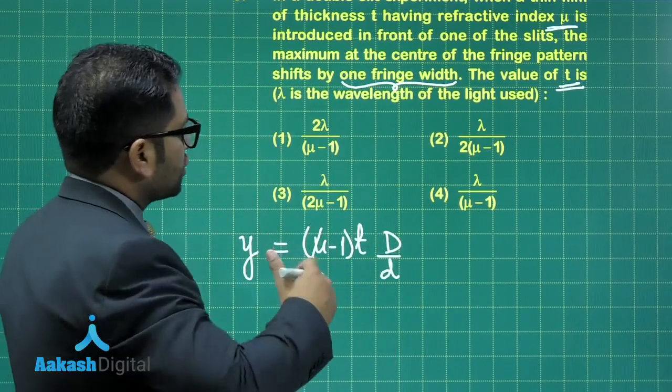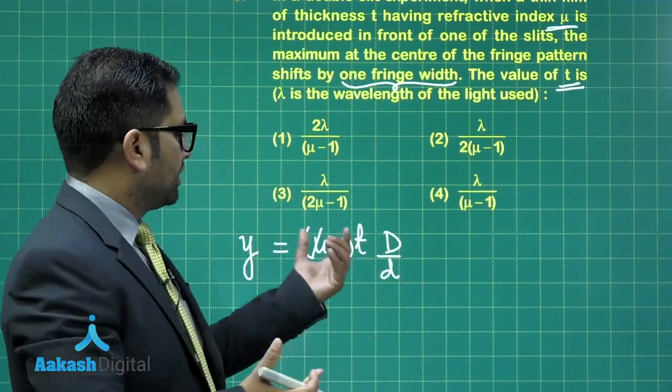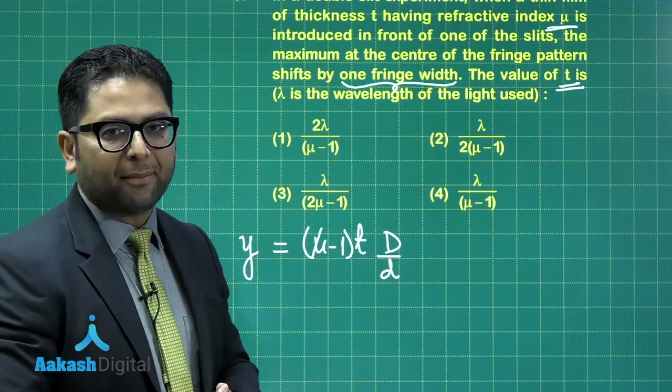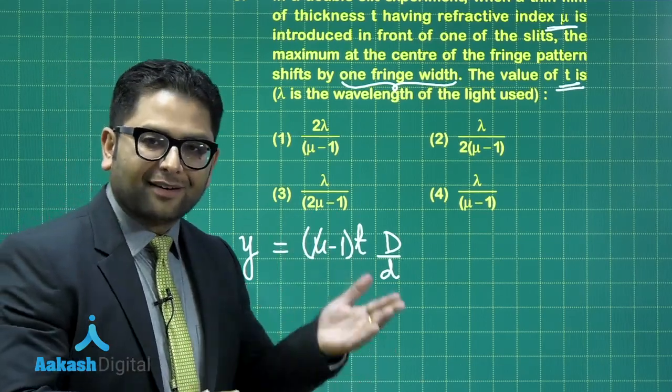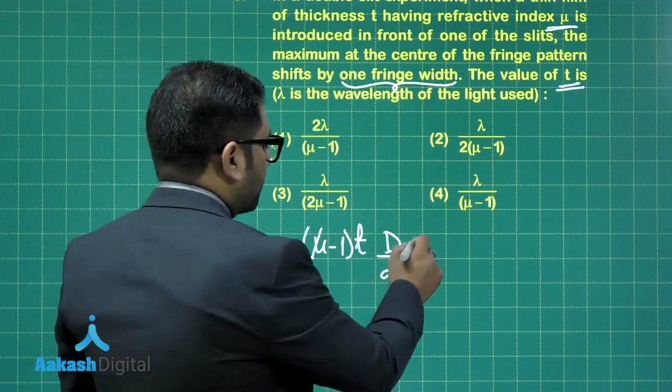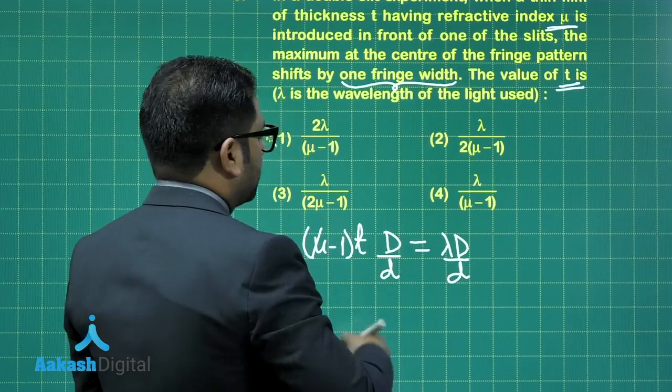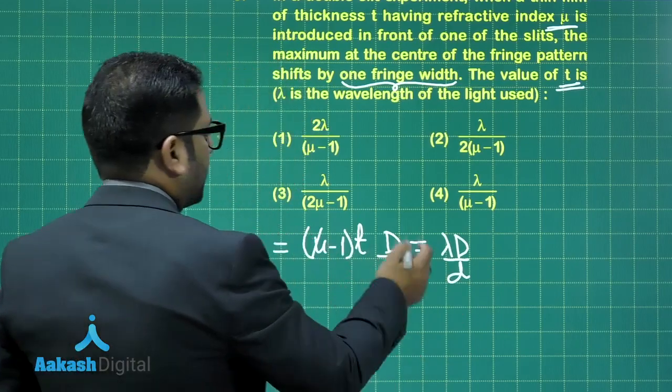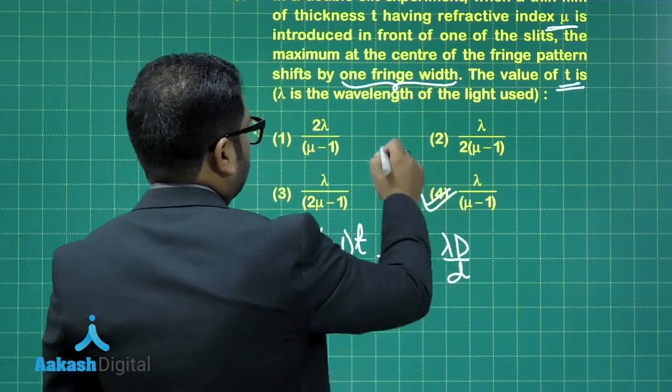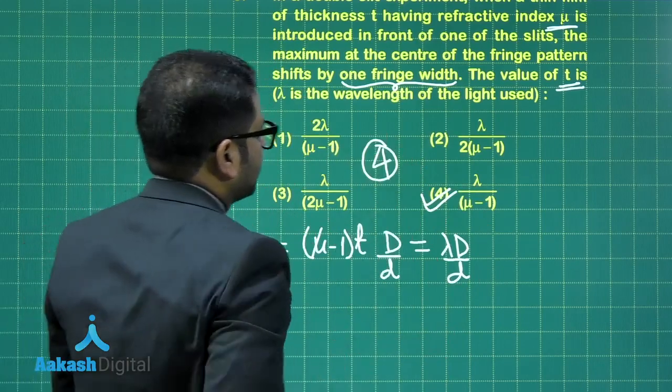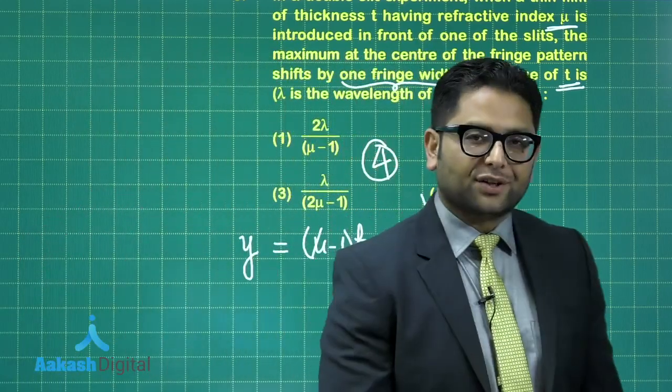So this is the shift which is generated because of the placement of the slab. And the question says, this shift is equal to one fringe width. So that's lambda D by d. Therefore, the value of thickness has to be lambda upon mu minus 1. Option number 4 is the correct option for this question.